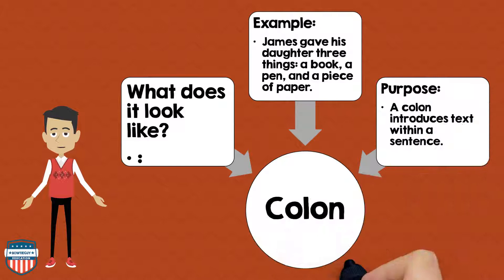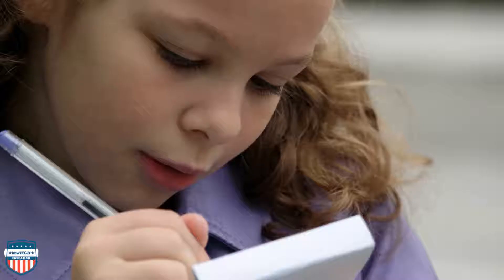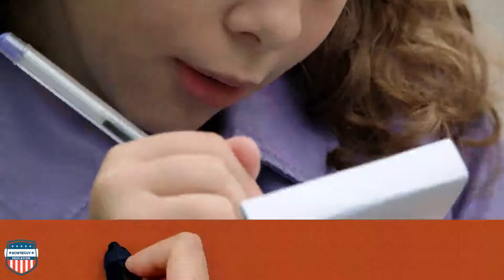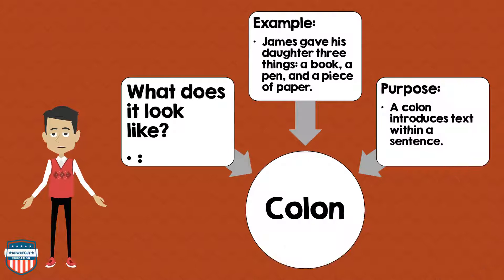Now, let's talk about the colon. The colon looks like two dots, one on top of another. An example of a colon in use: James gave his daughter three things: a book, a pen, and a piece of paper. What is the purpose of a colon? A colon introduces text within a sentence.